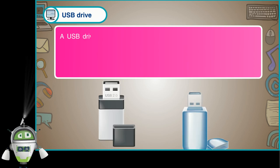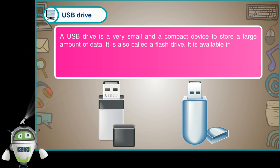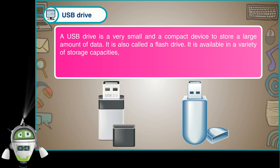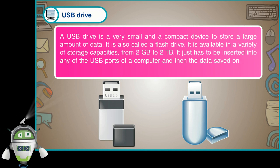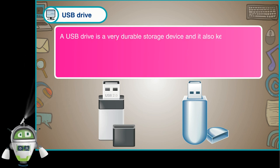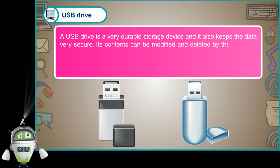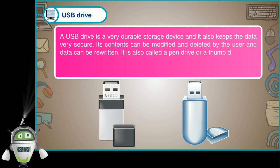A USB Drive is a very small and compact device used to store a large amount of data. It is also called a flash drive and is available in a variety of storage capacities, from 2 GB to 2 TB. It just has to be inserted into any USB port of a computer, and the data saved on it can be accessed and used easily. It is a very durable storage device that keeps data secure. Its contents can be modified and deleted, and data can be rewritten. It is also called a pen drive or a thumb drive.